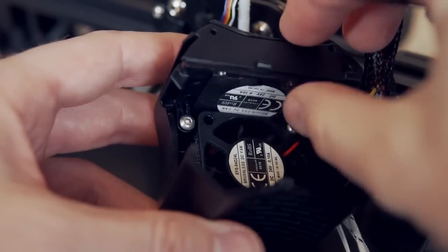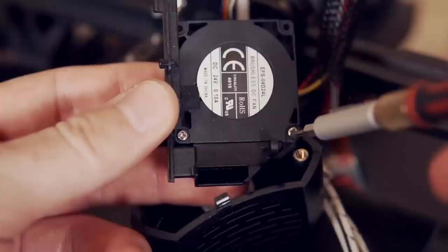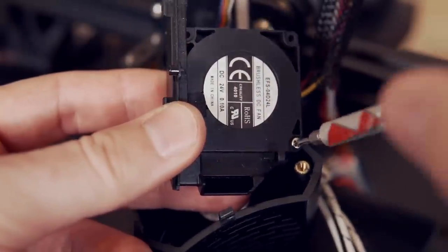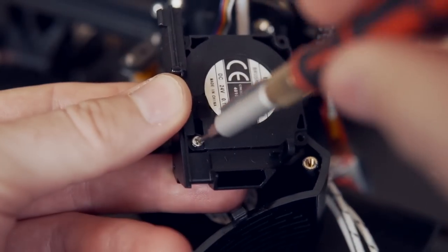Once you have the two screws removed, you can slide the layer cooling fan out along with the fan shroud. There are two tiny Phillips head screws that are holding the fan shroud to the blower fan and we'll need to remove both of those. Again we will be reusing these so hold on to them.